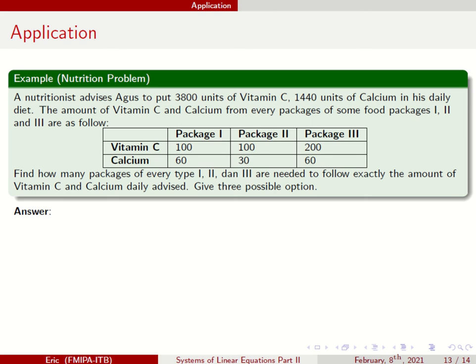Don't forget the first one: define your variable first. Let X, Y, and Z denote the number of food packages of type 1, type 2, and type 3 that are needed to be taken, respectively.